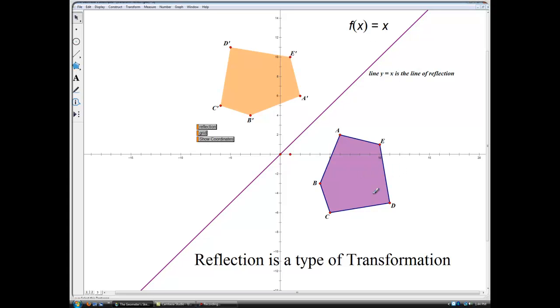The pre-image, or the original figure, I should say. And the reflected figure or our transformation is called the image. And the image has the D prime, the E prime, the A prime. These are the new version of this.